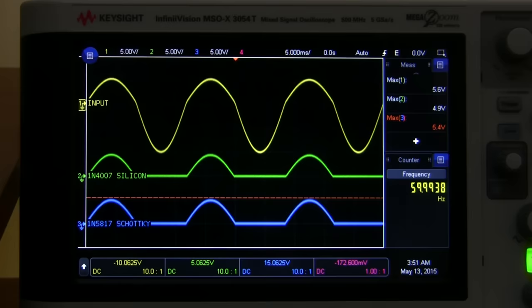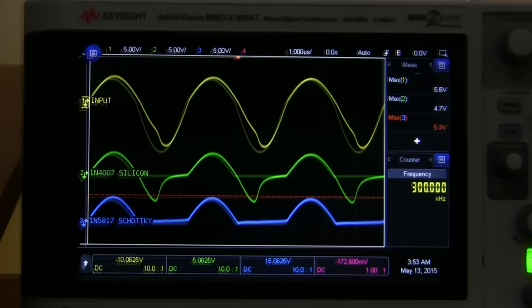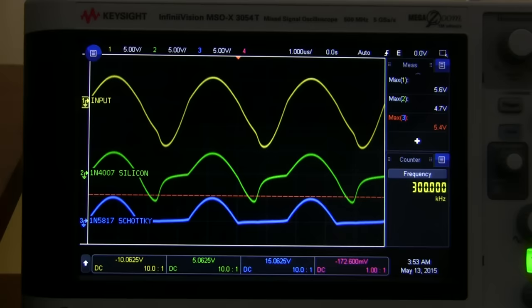What happens if we increase the frequency of the input sine wave to 300 kHz? That's a frequency you'd expect to see in a switch mode power supply. Woah, what's the matter? It's like the Schottky diode is on steroids and the silicon diode's been pushing too many pencils. The Schottky diode has no trouble with the higher frequency, and successfully prevents the reverse flow of current. But the silicon diode is doing a terrible job of rectification. In every cycle, it's spending a lot of time allowing current to flow backwards before finally blocking it off.